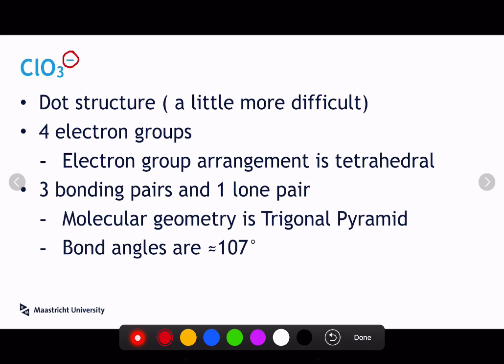So when we do the dot structure, we should get something like this. We get a chlorine. Each of the oxygens are attached to it with a single bond. And then there's a lone pair right there.